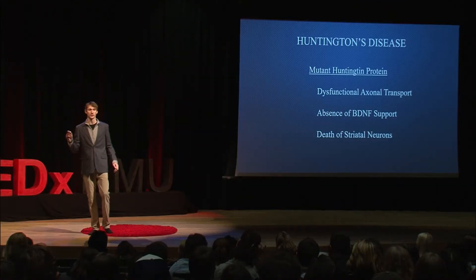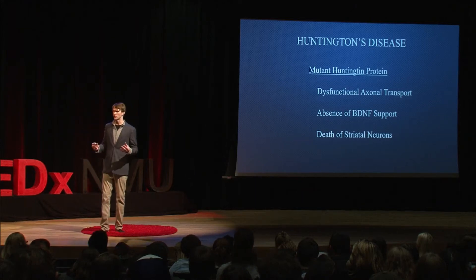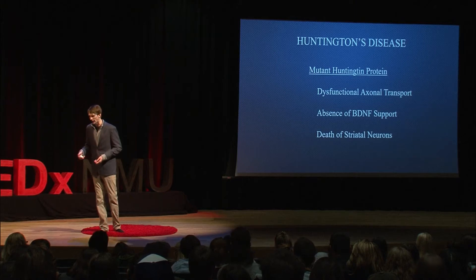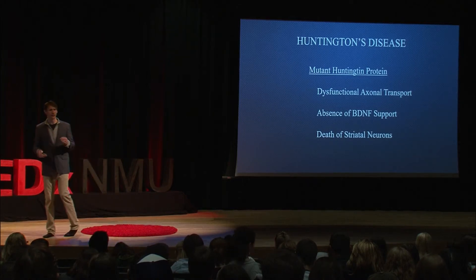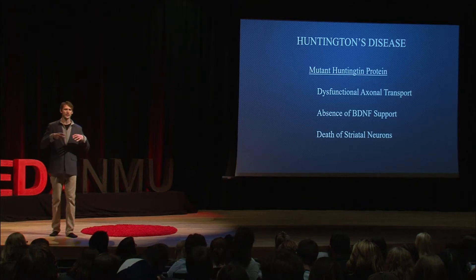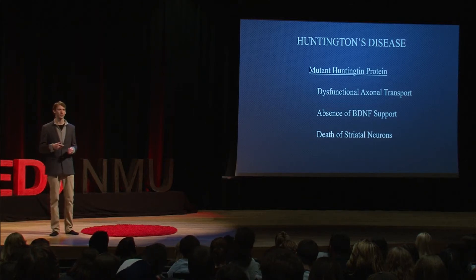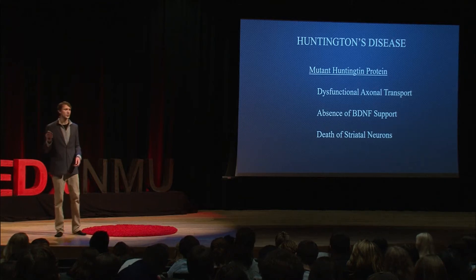I want to talk about one disease specifically: Huntington's disease. Huntington's is a movement disorder — an autosomal dominant disease that leads to the death of neurons in an area of the brain called the striatum, located in the basal ganglia, which is involved in coordination of movement. The Huntington protein itself is involved in an incredible cellular function called axonal transport. When BDNF binds to its TrkB receptor, those signals work like a relay, passing molecules down that lead to transcription of new genes.